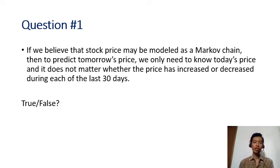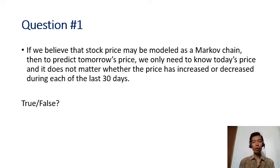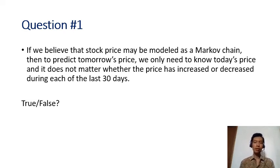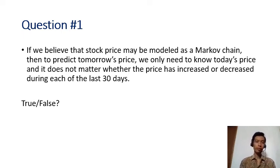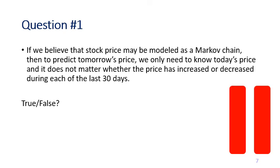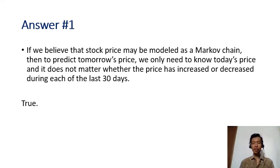Let me ask you some questions to check your understanding. I will give you a pause to think, then give you the answer. First question: if we believe that stock price may be modeled as a Markov chain, then to predict tomorrow's price we only need to know today's price, and it doesn't matter whether the price has increased or decreased during each of the last 30 days. Is this statement true or false? The answer is true — if you believe stock price can be modeled as a Markov chain, you only need to know today's price.